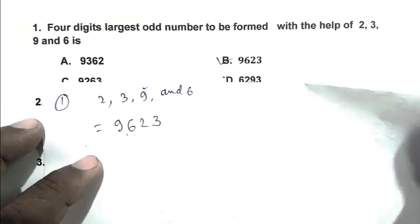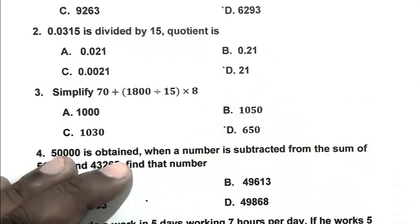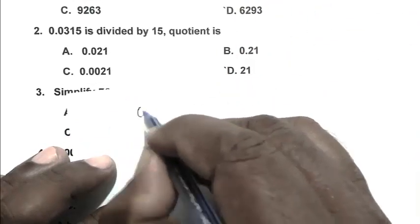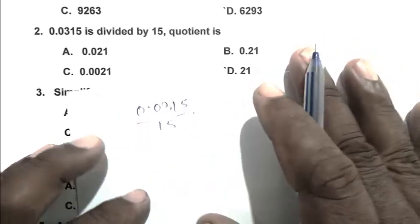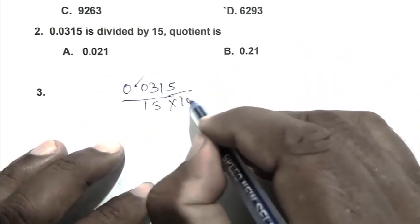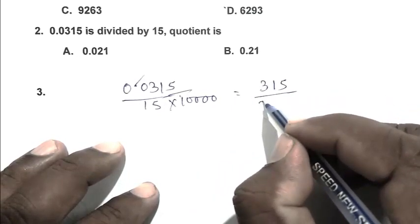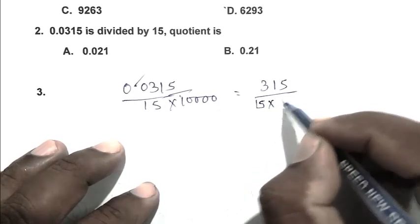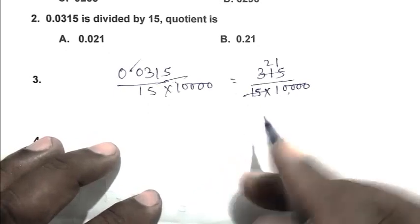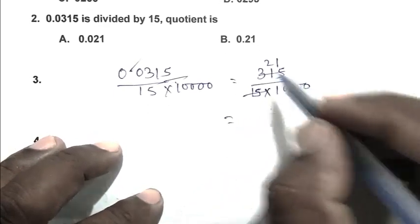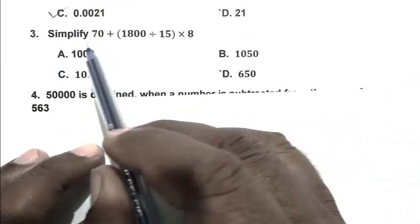Question number two: 0.0315 is divided by 15. We divide 0.0315 by 15. Eliminating the decimal point we get 315 divided by 15, multiplied by 10,000, which gives 21. Placing the decimal point after four digits, the answer is 0.0021. C is the right answer.